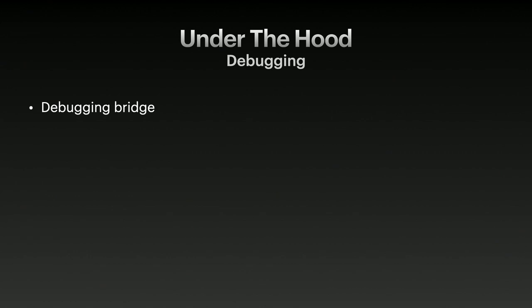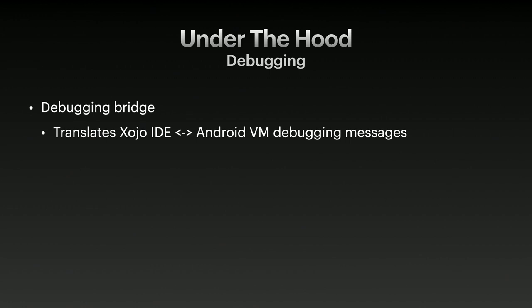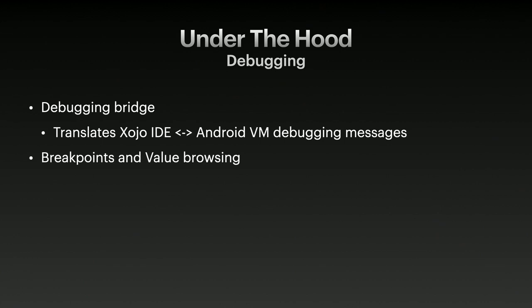With this transpiler approach, we needed debugging to work just like on other platforms, even though it's completely different behind the scenes. Paul has had quite a journey building this bridge between two very different approaches. This bridge translates Zojo IDE messages and Android virtual debugging messages so they match up, allowing your regular debugging experience in Zojo to work — setting breakpoints, removing them, viewing variable values, and so on. This new compilation process is still a journey with some bugs here and there, but it's come a very long way, particularly since the last XDC.